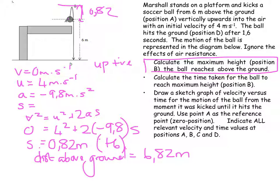Calculate the time it takes for the ball to reach that same maximum height. So I'm going to use the same data. This time, I'm going to go v is equal to u plus at. 0 is the final velocity, initial is 4. Acceleration is negative 9.8. And my time turns out to be 0.41 seconds. So that is the time it takes to get to the top.